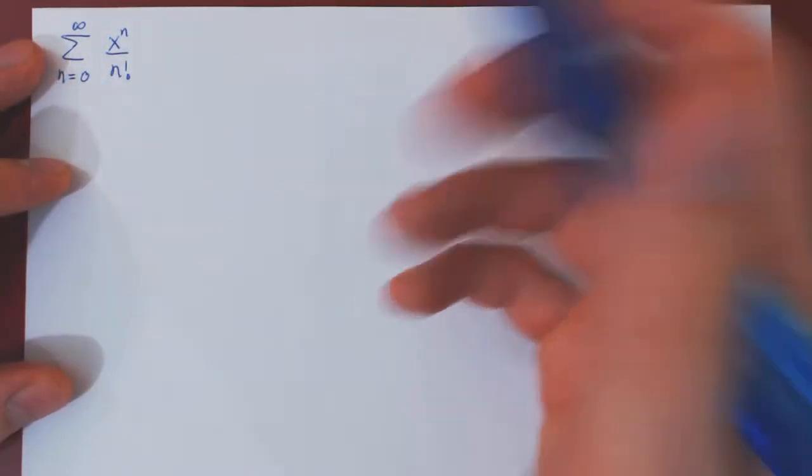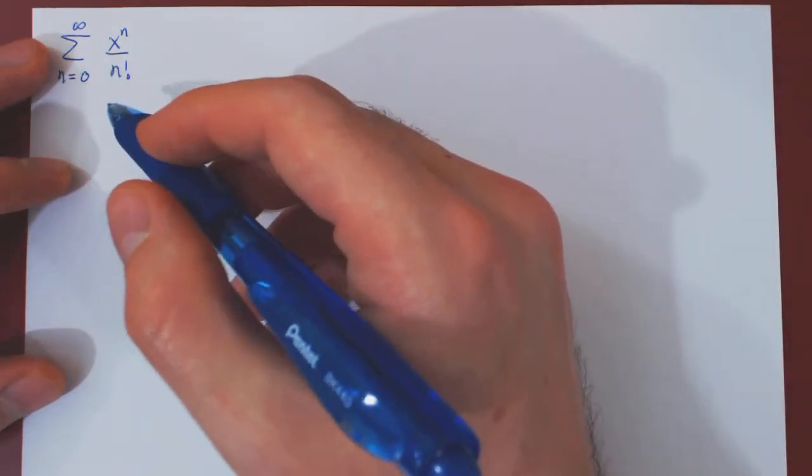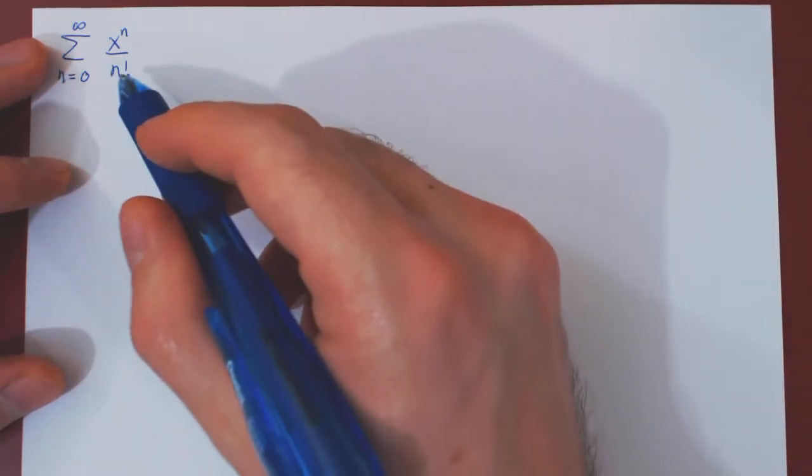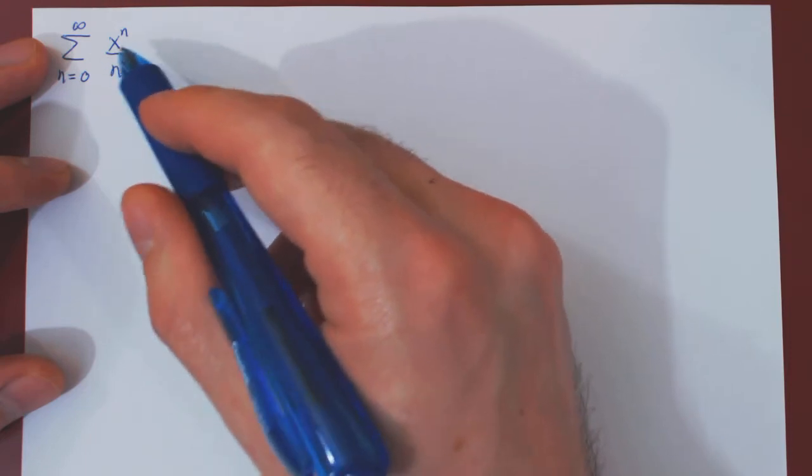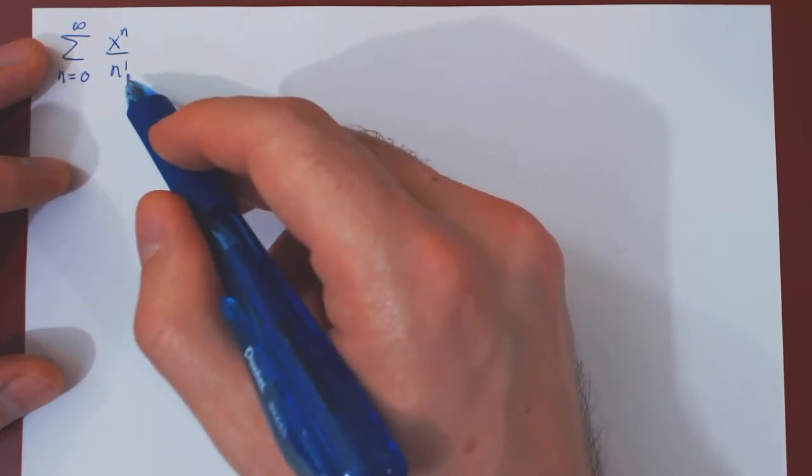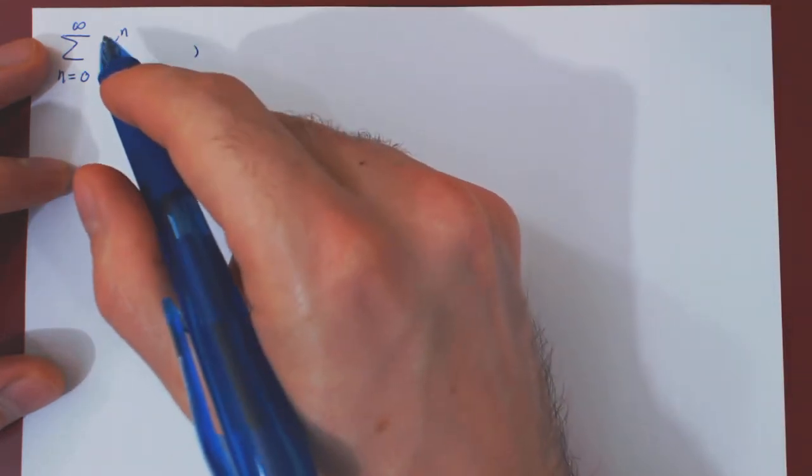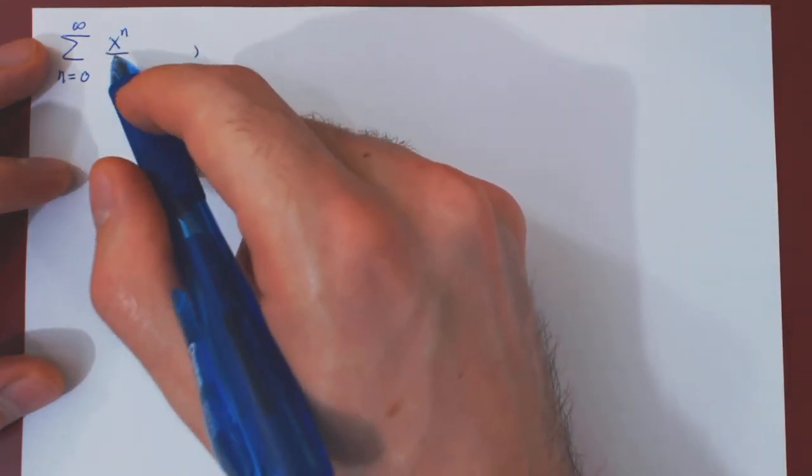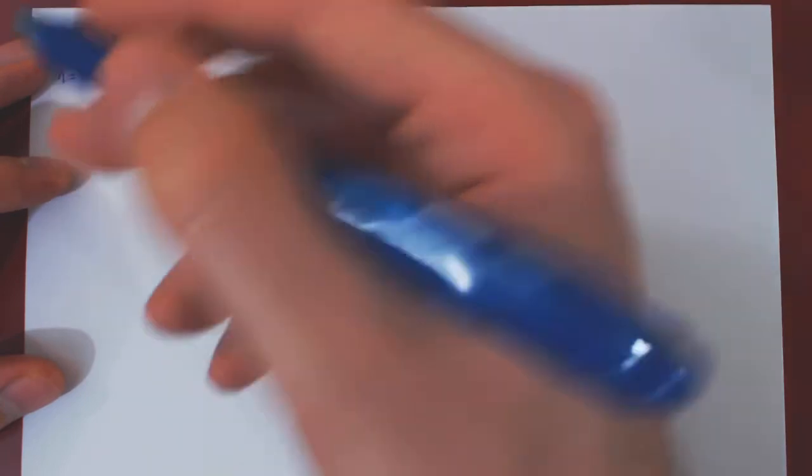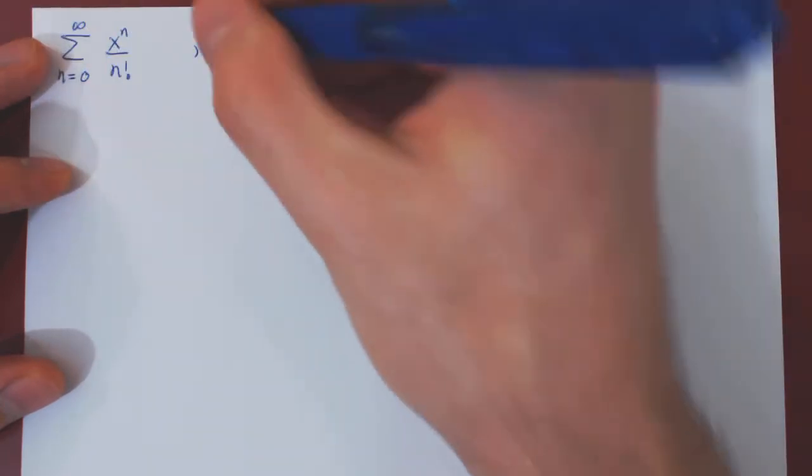We can usually use, in the case of a power series, the ratio or the root test. But here, because there is a factorial, we should not use the root test, but instead the ratio test. And notice here, because we simply have an x to the n, x is really x minus 0, and so the center of the power series is 0.